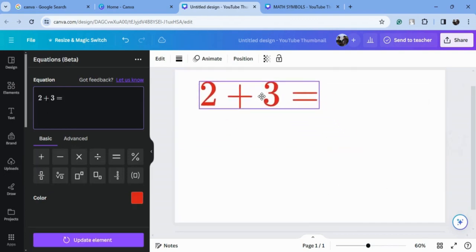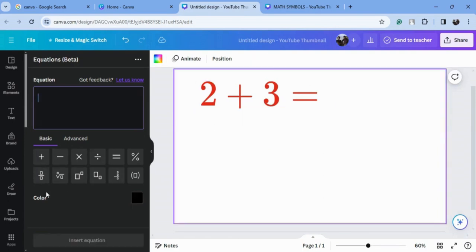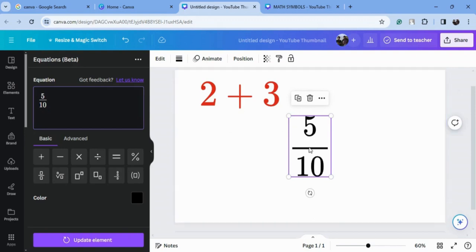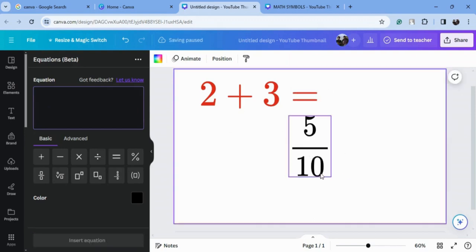If you want to add a fraction, here is the symbol. I will type my numbers here—click on this and type 10. Again, insert equation. This is how you can add different symbols or equations.